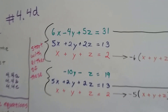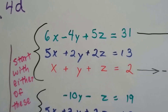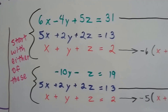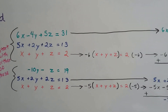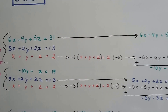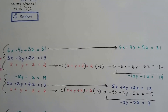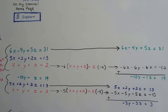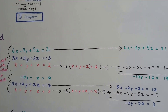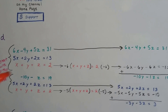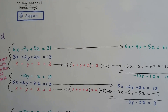So here's our system of three equations. If you notice, it says in pink here, start with either of these. It didn't matter which one I started with. You could start with either one as long as you're doing the same thing. I chose to start with the bottom equation — x plus y plus z equals 2 — because there are no coefficients, so it would be easy to multiply that one to fit the others and eliminate the x.